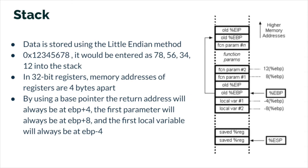Data is stored in little endian format. For example, a hexadecimal address like 12345678 would not be stored as 12345678, but rather as 78563412 in the stack. In 32-bit registers, memory addresses are four bytes apart. Using a base pointer, the return address will always be EBP plus four, the first parameter will always be at EBP plus eight, and the second parameter at EBP plus twelve. The first local variable will always be at EBP minus four. This will be especially important for the reverse engineering workshop.